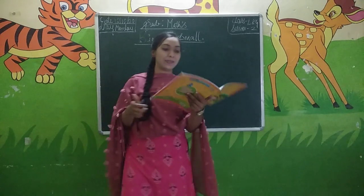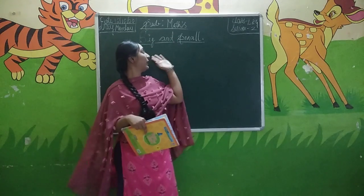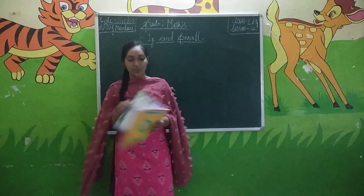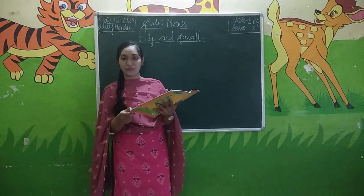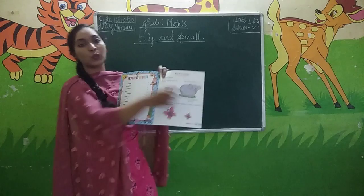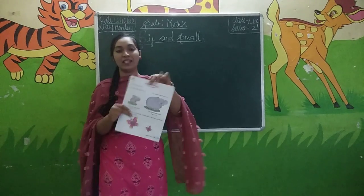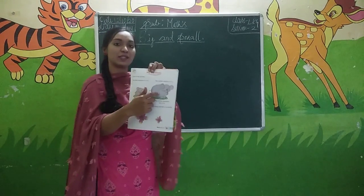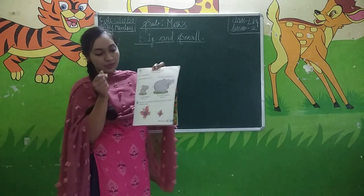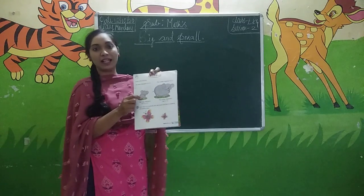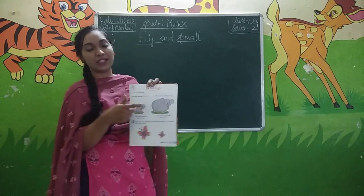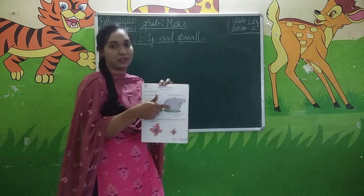So students, what do you mean by big? Big and small — so what is big and what is small? Can you see in the textbook, page number 5? He has given two animals: a small animal and a big animal. This small animal is a baby elephant, whereas this big animal is a mother elephant — baby elephant and mother elephant.